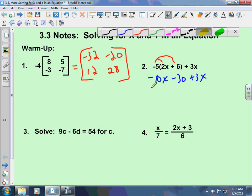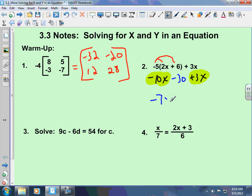All you're going to do is distribute the negative 5, minus 30, plus 3x. Now, you combine the negative 10x and the positive 3x. This gives you negative 7x minus 30.